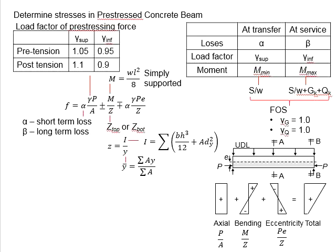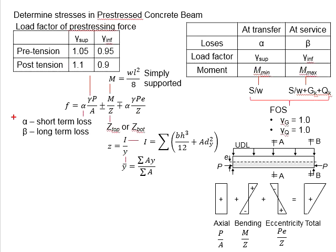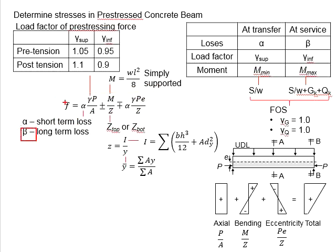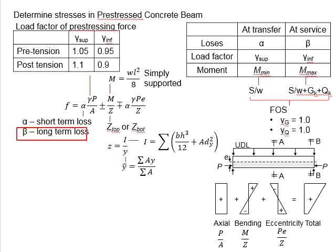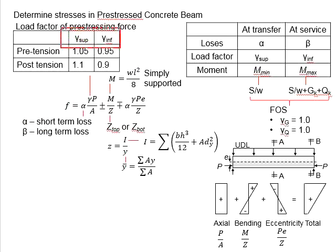When calculating stress at the transfer stage, we use alpha and gamma superior. When calculating stress at the service stage, beta and gamma inferior are used. The transfer stage relates to short-term losses, as transfer occurs before the concrete reaches its mature strength. The service stage accounts for all losses consolidated over time, hence beta is used. The same concept applies to gamma superior and inferior — efficiency is better at transfer and degrades at service.